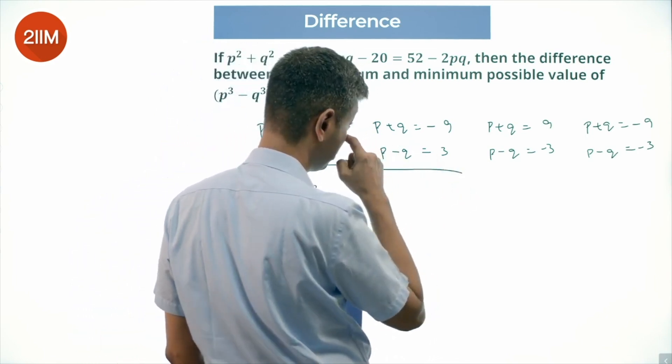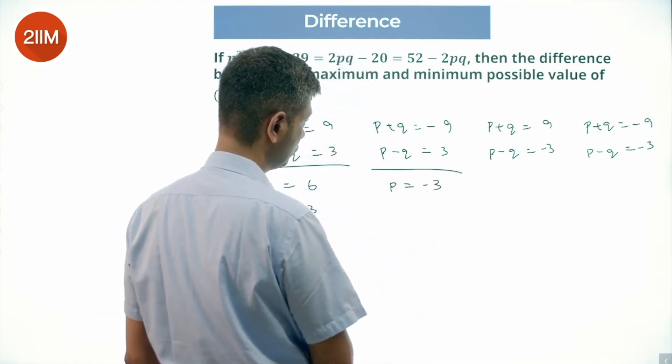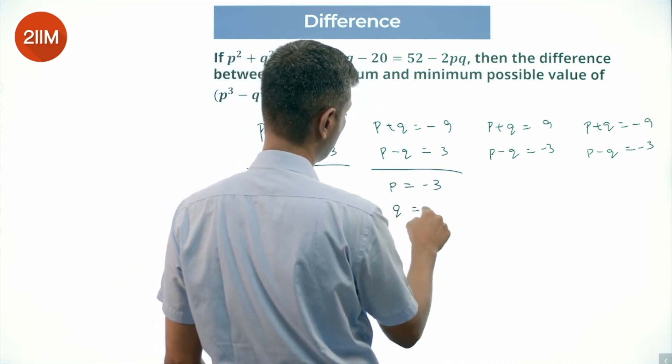2P is minus 6, P is minus 3, Q is minus 6.